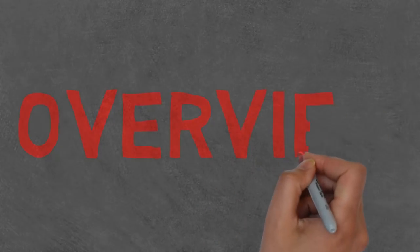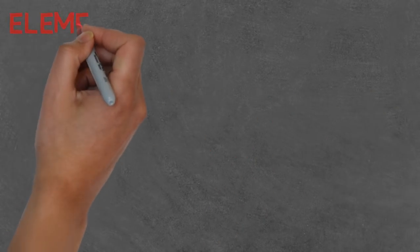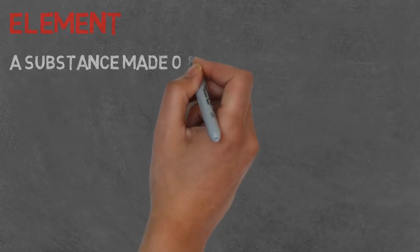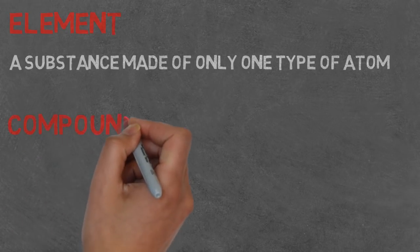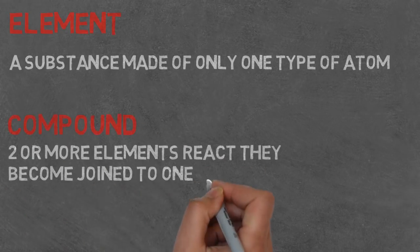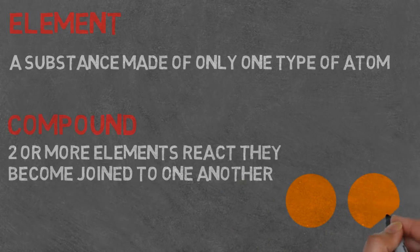So let's do a quick overview. What is an element? An element is a substance made up of only one type of atom. It is in the simplest form of matter and can't be broken down any further. If you look at a compound, it is two or more elements that react in a chemical reaction and become joined together.